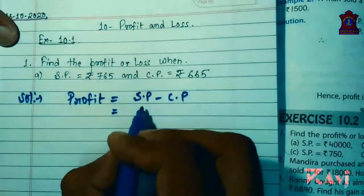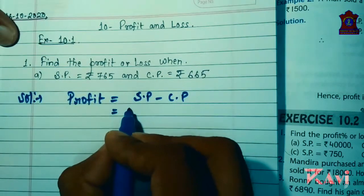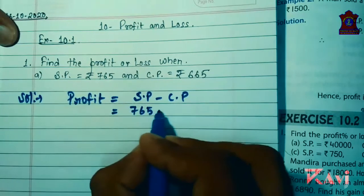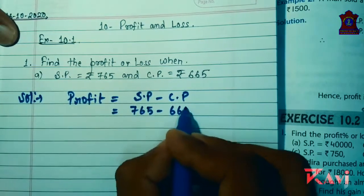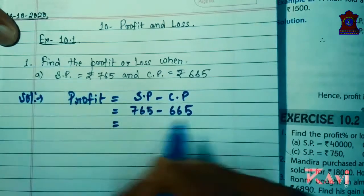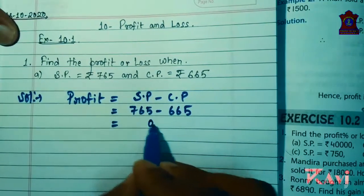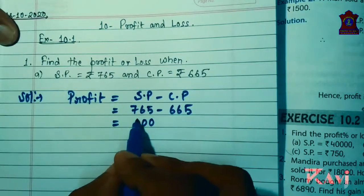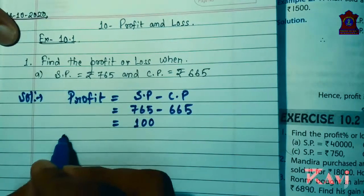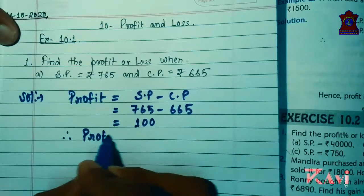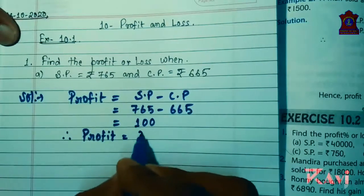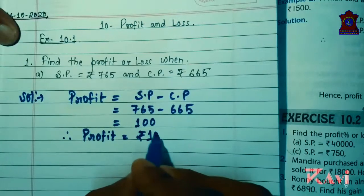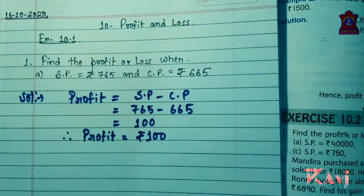So 765 minus 665. See here: 5 minus 5 is 0, 6 minus 6 is 0, and 7 minus 6 is 1. Therefore, Profit equals rupees 100. Like this we have to find out all the other questions from question number one.